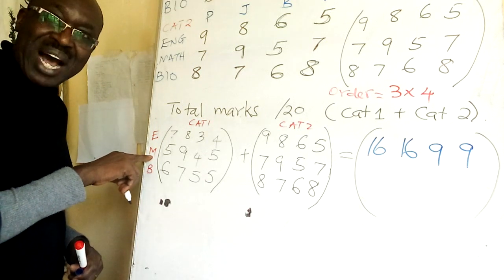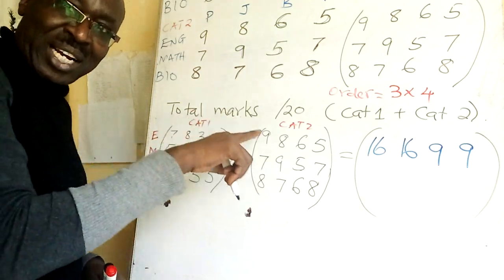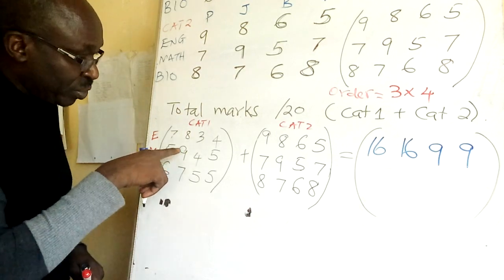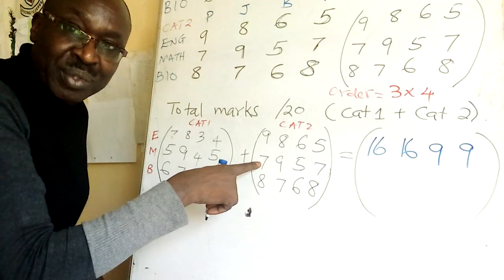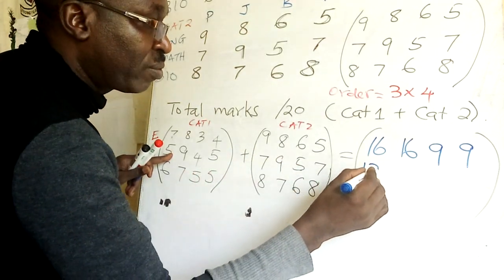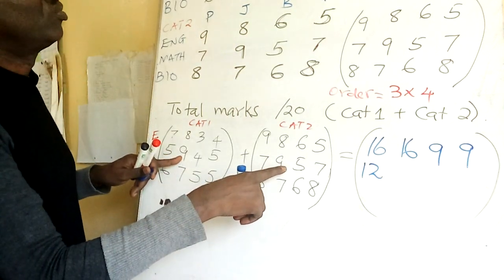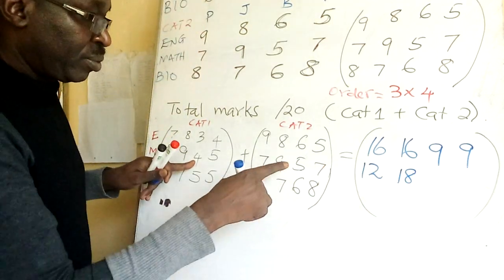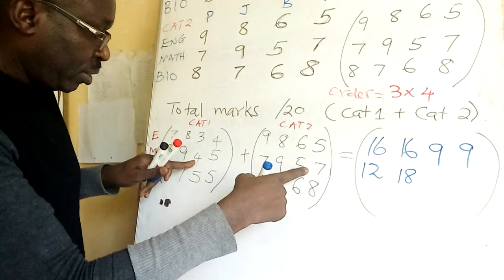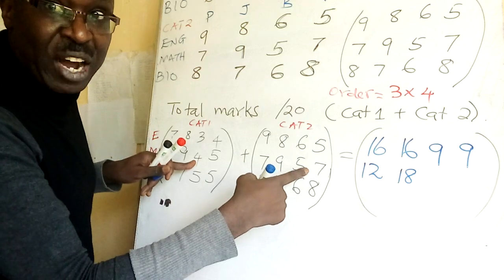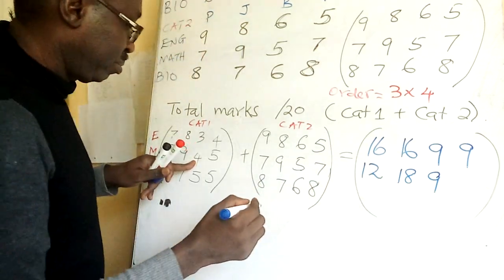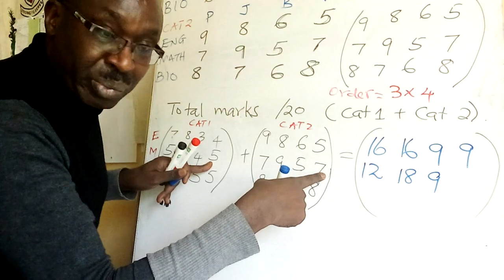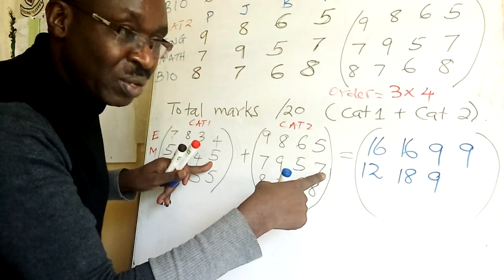Now, I want to add their Maths in cut one and cut two. So, I check here. Peter got five cut one. The same position I maintained for Peter. Seven. So, five and seven, twelve. Then, you come to John. Cut one, nine. Cut two, nine. Very good, 18. Then, I come to Brian. Cut one, four. Cut two, five. Good. Nine. Then, I come to Victor. Cut one, five. In Maths. Cut two in Maths. Seven. Total. Twelve.